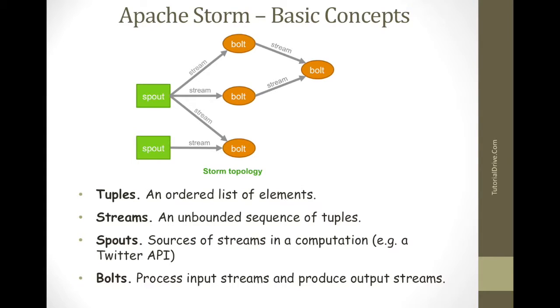And spouts are the source of streams. Generally Storm accepts input data from raw data sources like previously I mentioned Twitter streaming API or Apache Kafka queue and etc. Otherwise we can write spouts to read data from data sources.